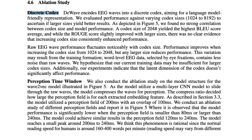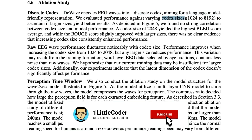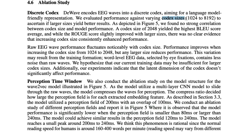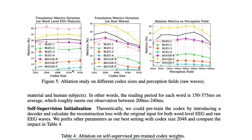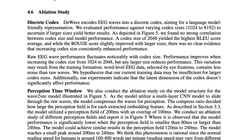One detail I found interesting: they describe how they built the discrete codex, saying 'D-Wave encodes EEG waves into discrete codex aiming for a large-language-model-friendly representation,' since LLMs need tokens. A very interesting observation is that when they increase the codex size — think of it like the context window in LLMs like ChatGPT (2k, 100k, etc.) — increasing from 1,000 to 8,000 didn't show a huge change in results. In fact, a codex size of 2,042 yielded the highest BLEU score, while the ROUGE score only slightly improved with larger sizes, with no clear evidence that increasing codex size consistently helps.